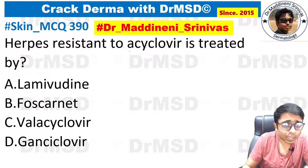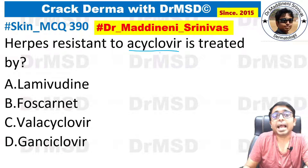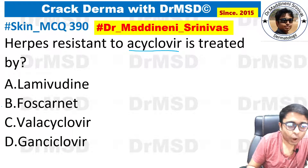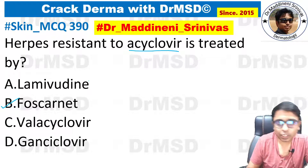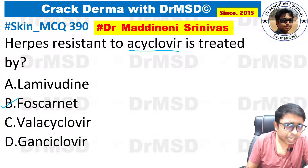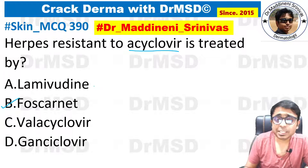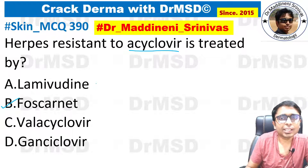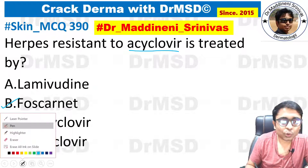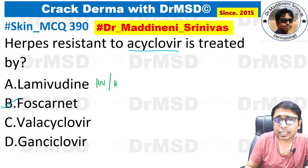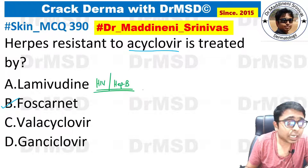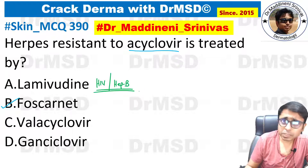Herpes which is resistant to acyclovir is treated by — and if you have marked option B, that is Foscarnet, as the answer, very good, you are absolutely right. First we will rule out some options. Option A, that is lamivudine, is an antiviral medication no doubt, but it acts against HIV viruses or hepatitis B viruses but does not have any role in herpes viruses. So option A is ruled out.